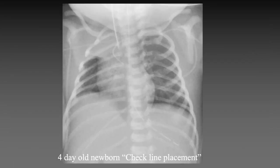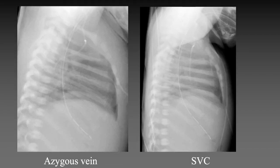Here is a newborn with a central venous catheter that takes an unusual course. In this situation, it is often helpful to obtain a lateral view of the chest. The tip of this catheter was in the azygous vein, located in a more posterior position than the normal superior vena cava.